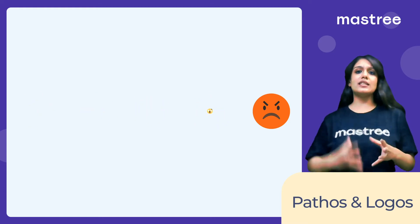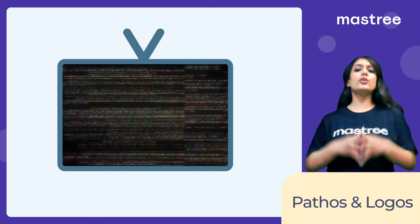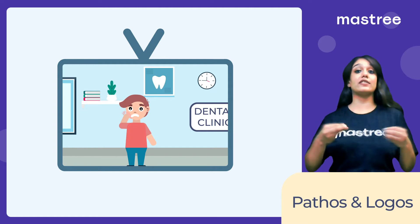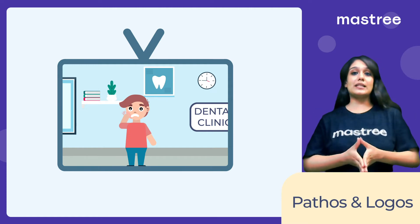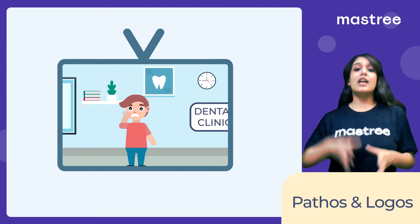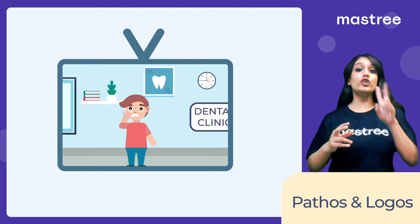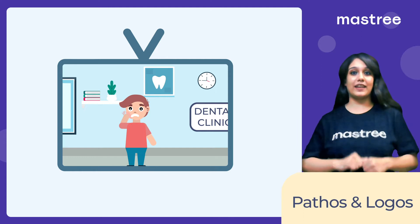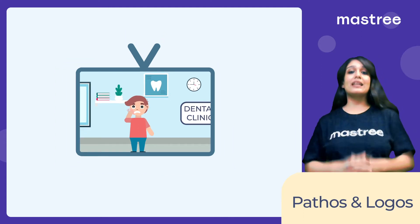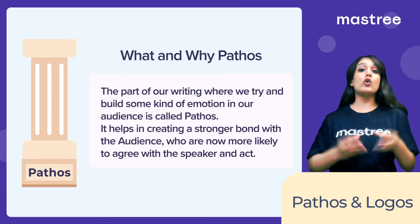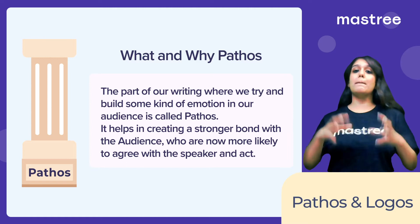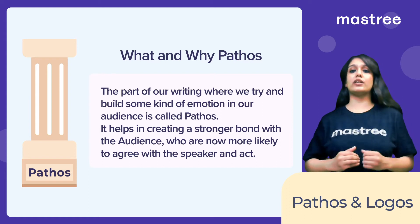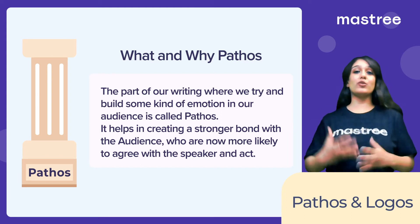Before we talk about the importance, let us look at another example. You'll notice a similar trend in the ad of a regular toothpaste. A person will have severe pain in their teeth and will start using the advertised toothpaste, and later he or she will be seen enjoying a nice ice cream or candy. What the ad is doing here is relying on two emotions: pain because of the tooth problems, and joy after getting rid of the pain thanks to the toothpaste. This part of the writing where we try and evoke some kind of emotion in our audience is called pathos. Pathos helps in creating a stronger bond with the audience, who are now more likely to agree with the speaker and act because their emotional core has been engaged.